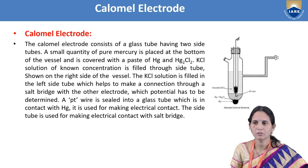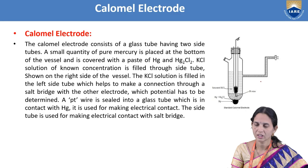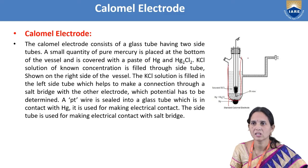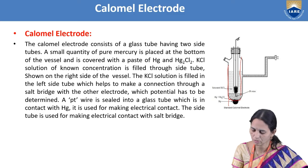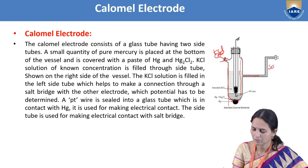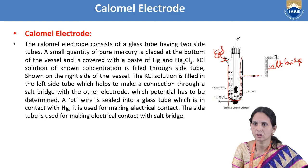The calomel electrode — we need to know its construction, how to find its potential, its standard potential, and its advantages. The calomel electrode consists of a glass tube having two side openings. Through one side tube we take the KCl solution, and the other tube is connected to the salt bridge.